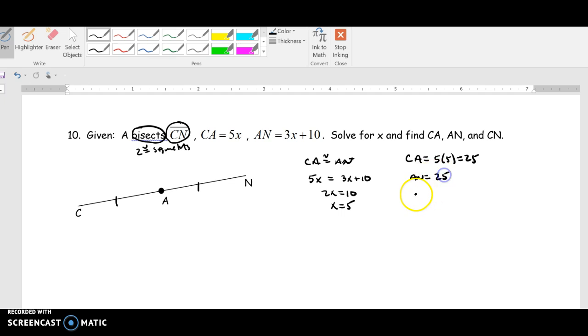And then you know CN, if both of these are 25, if this is 25 and this is 25, you know the whole segment is 25 plus 25, which is 50. Okay.